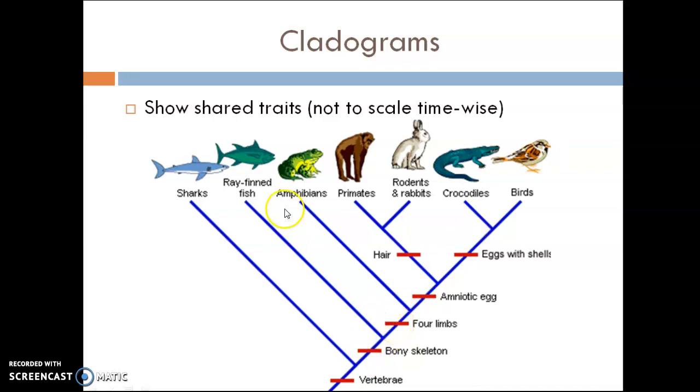Four limbs. We know that fish and sharks don't have what we consider limbs, but amphibians, primates, rodents, birds, etc. do. Amniotic egg. That could include an internal egg, such as in a mammal. Eggs with shells. No, the Easter bunny does not lay eggs with shells, right? Neither do primates, but crocodiles do and birds do. And so a cladogram just tries to show some of the common features that creatures share and some of their large scale relationships.